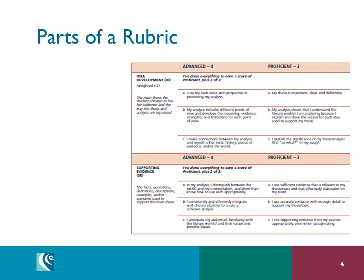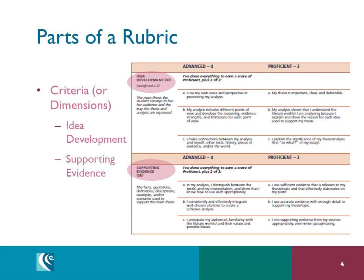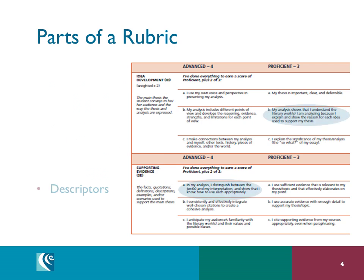The parts of the rubric are generally well understood, but sometimes people use different terms. Descriptors, for example, are sometimes called indicators. For us, the columns — proficient, advanced, etc. — are called score levels. The criteria or dimensions are the learning targets being assessed, usually in the leftmost column of the rubric. The descriptors or indicators are the descriptions of evidence that will attest to achievement of the learning target.